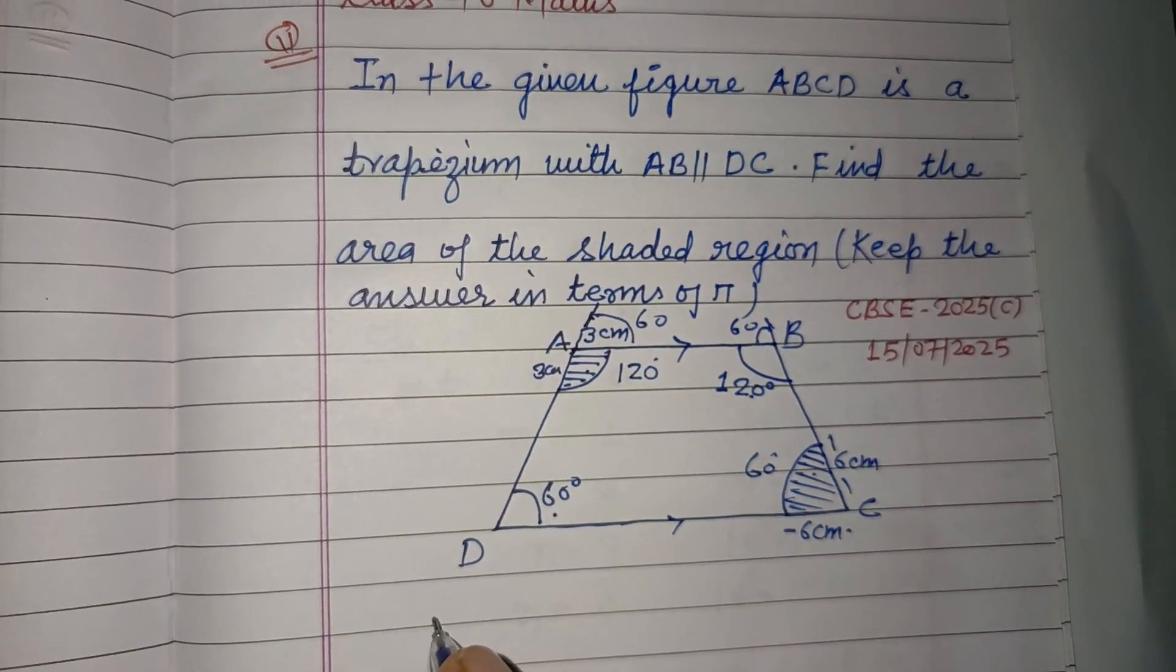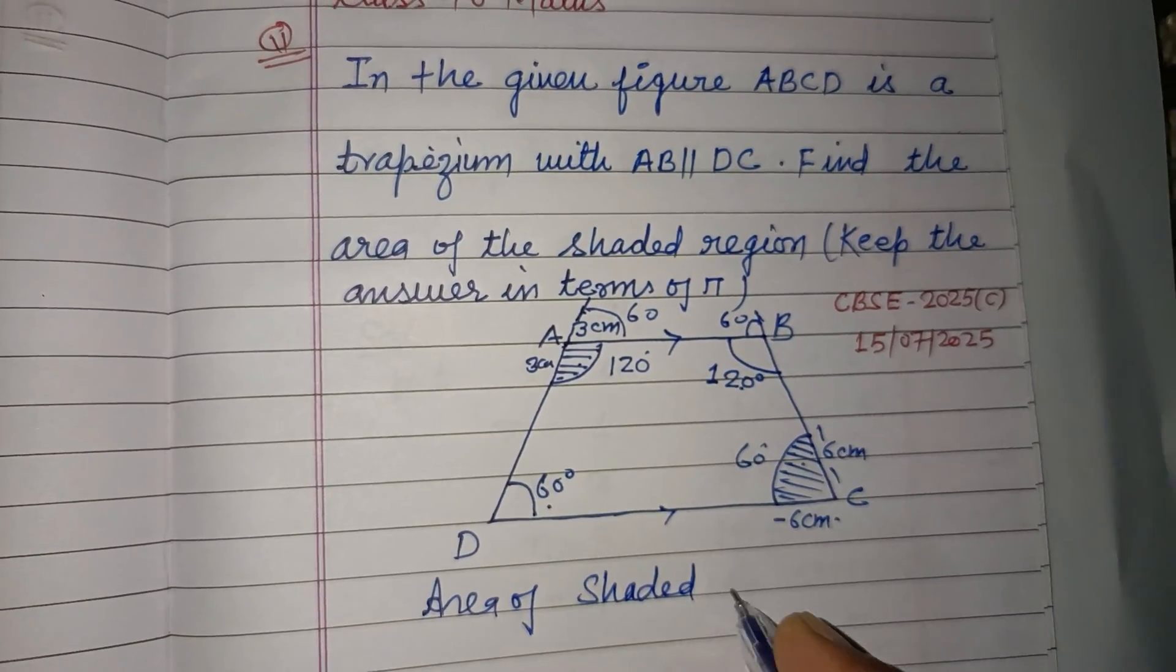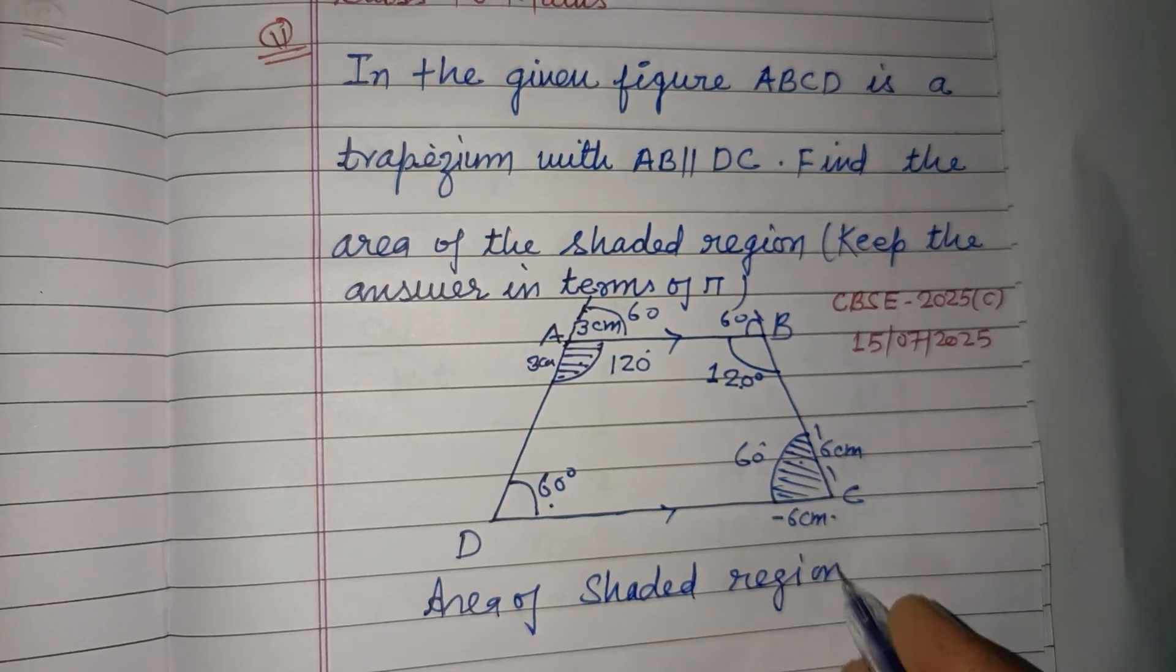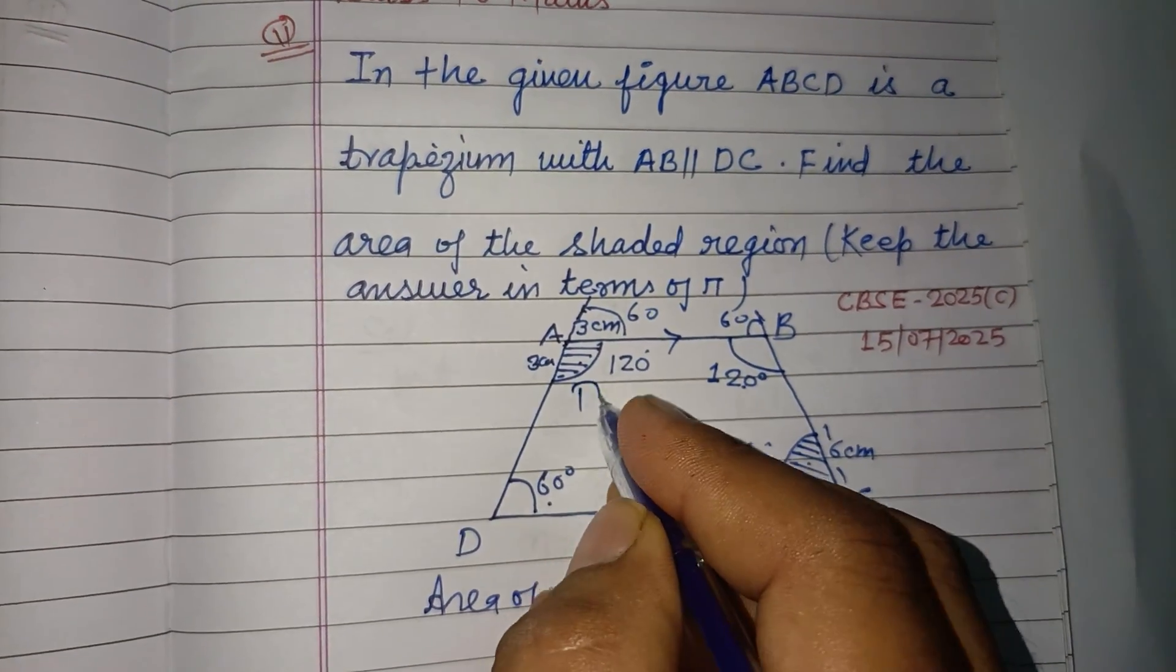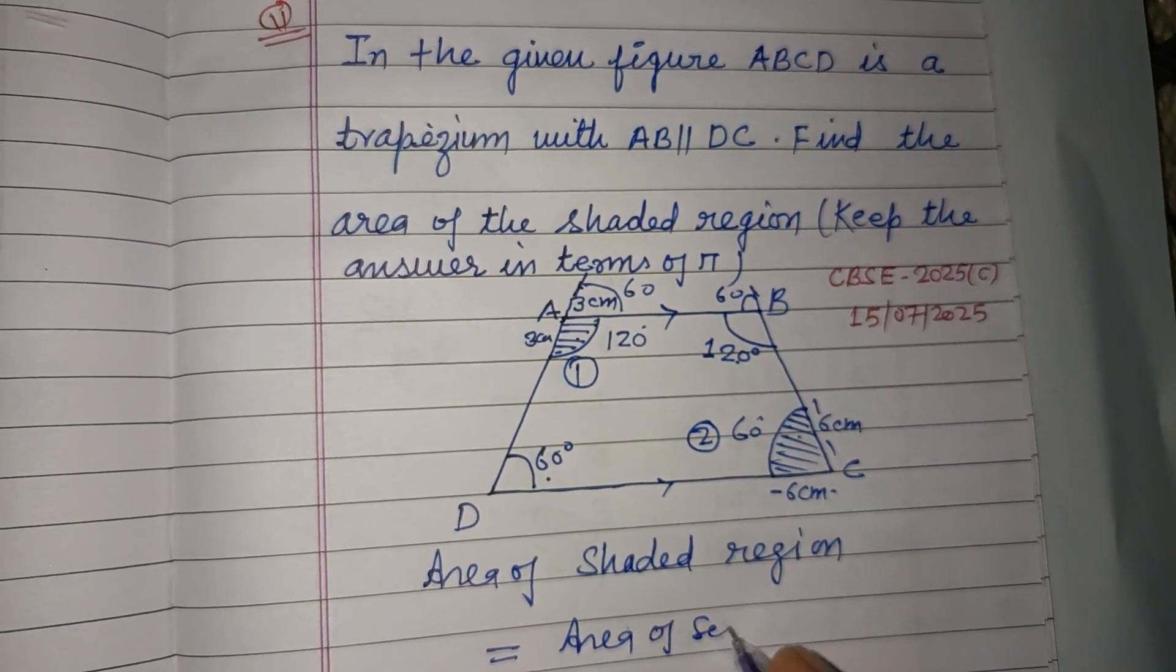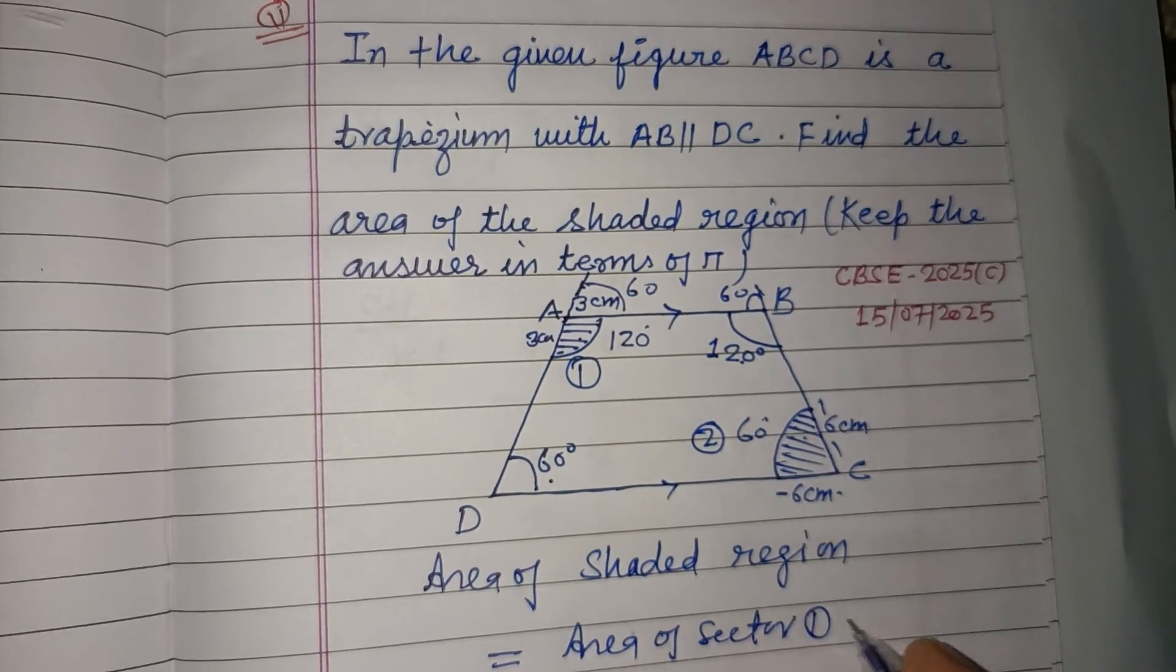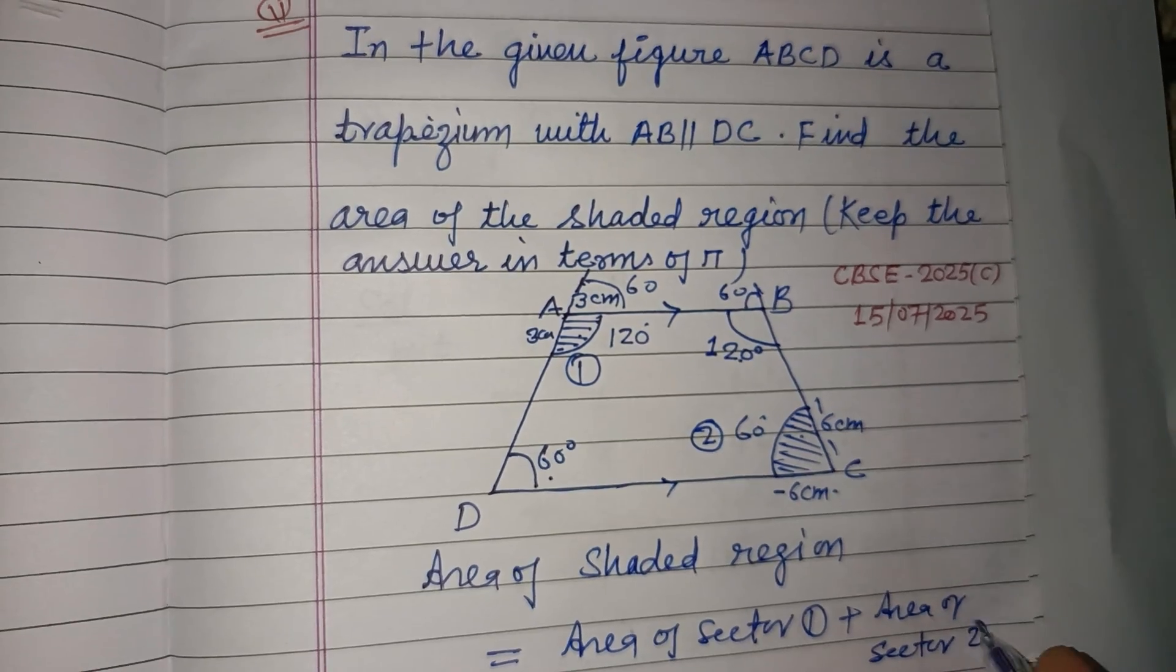So, area of shaded region equals the area of sector first plus area of sector second.